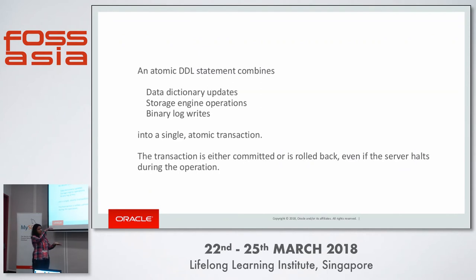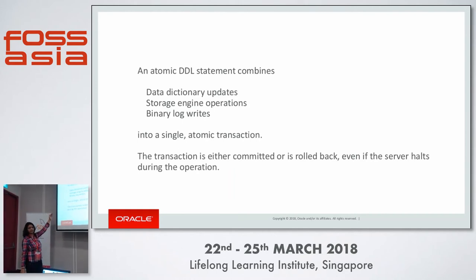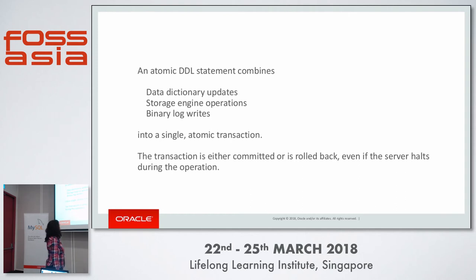With Atomic DDL, all three operations go into a single transaction — either the complete transaction gets committed or rolled back. Even if the server halts in between, it is going to get rolled back. This is the essence of the atomicity of DDL.